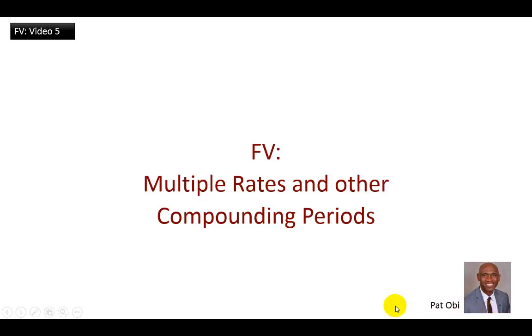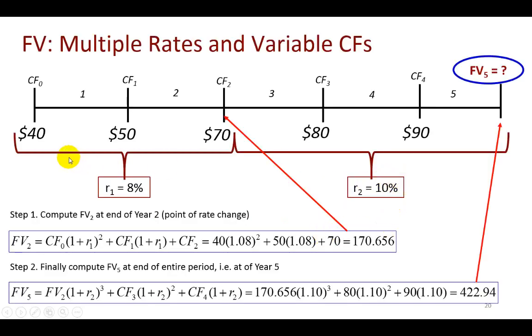In this video, number five of my time value of money series, I'm going to show the future value calculation for cash flows when there are multiple rates and different compounding periods, which is what we have in this first example. As you can see, the required rate of return switches from 8% to 10% after the second year. I outlined the steps here. The first thing you want to do is compound the future value at the end of the second year, which is where the first required rate of return terminates.